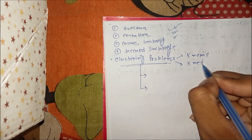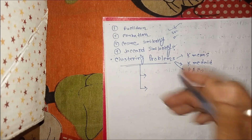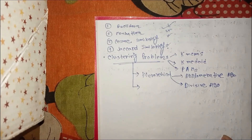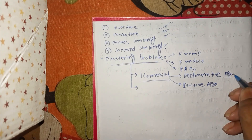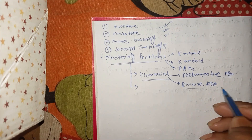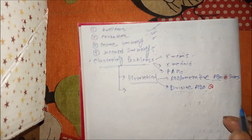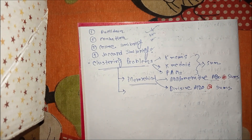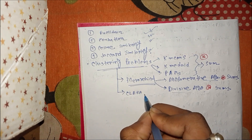For clustering problems, we have K-means and K-medoid, and also hierarchical clustering. Hierarchical clustering has two methods: agglomerative and divisive. Numerical questions for this year will be important for these portions. K-means, K-medoid, and PAM were already asked in previous years, so for this year agglomerative and divisive algorithms will be the most important. Advanced topics include CLARA and CLARANS.